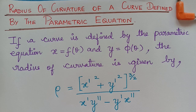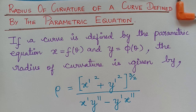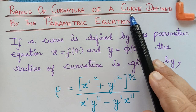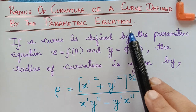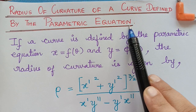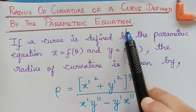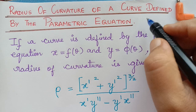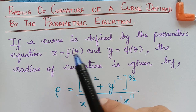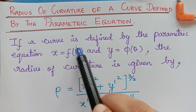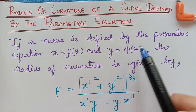Dear students, under the topic radius of curvature, we previously learned how to find the radius of curvature when given in the form of a Cartesian equation. Now we are going to learn the radius of curvature of a curve defined by the parametric equation. A Cartesian equation is given in terms of x and y together, but a parametric equation has x in terms of theta separately and y in terms of theta separately.